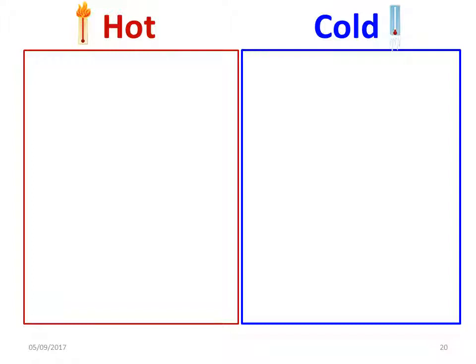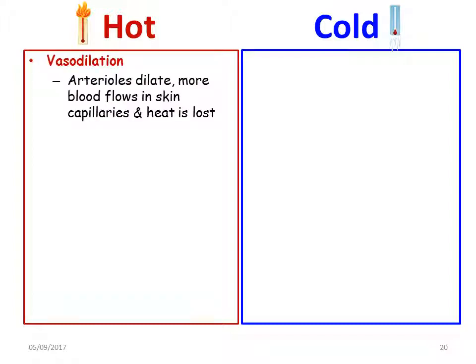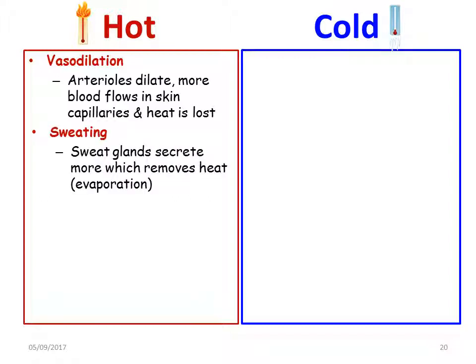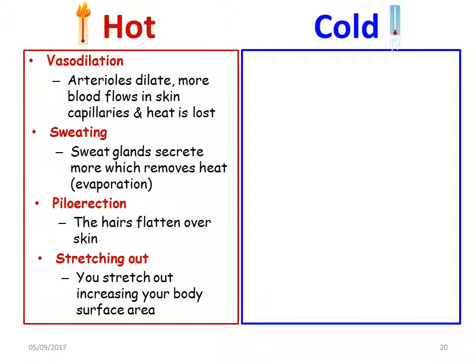When temperature rises, vasodilation occurs — arterioles dilate and more blood flows into the skin capillaries, allowing heat to be lost. Sweat glands secrete more sweat, removing heat through evaporation. Piloerection causes hairs to flatten over the skin, and the body stretches out to increase body surface area in order to dissipate heat.